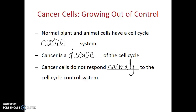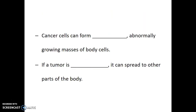Often, the cell cycle control system is telling cells to wait, to not divide, to not continue going through cell division. However, in cancer cells, the message to stop isn't listened to.